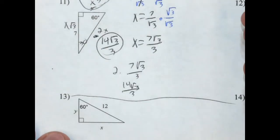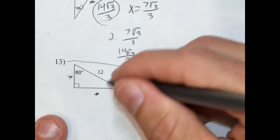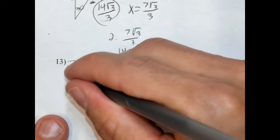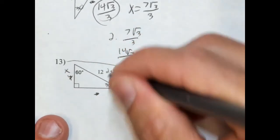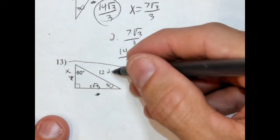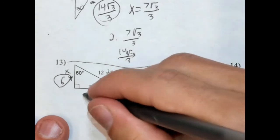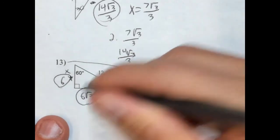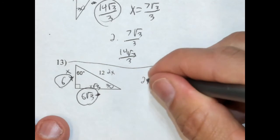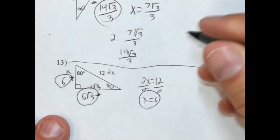Let's take a look at this one. Cross these out. This is 30. So this is x, this is 2x, and this is x radical 3. So 2x equals 12 — divide by 2 — x equals 6. So this is 6, and this is 6 radical 3, because this is half that.